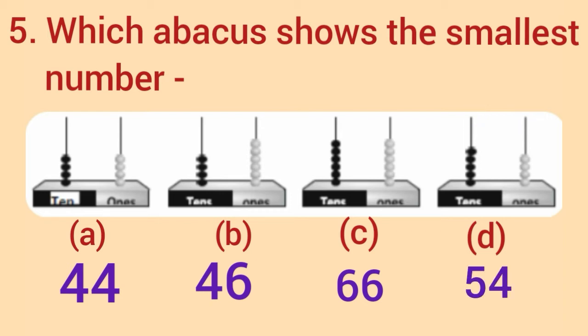Now, we find the smallest number from these numbers. To find smallest number, let us see the digit at 10's place. Which is the smallest digit? So, there are 2 numbers with the smallest digit. Numbers 44 and 46.